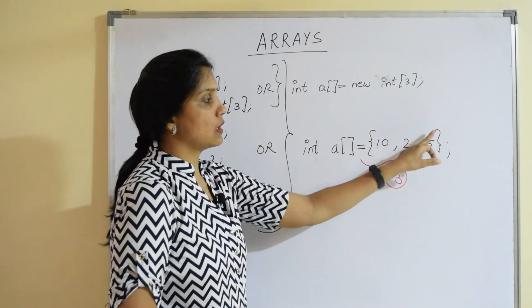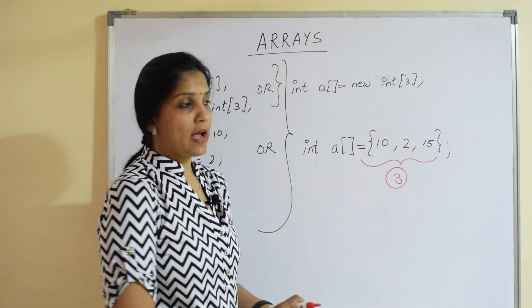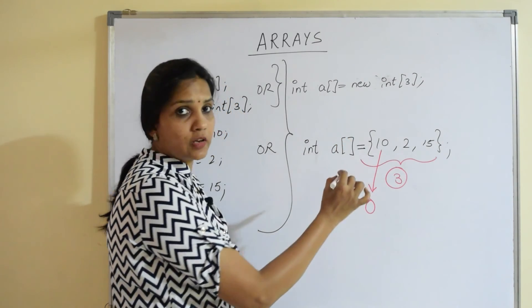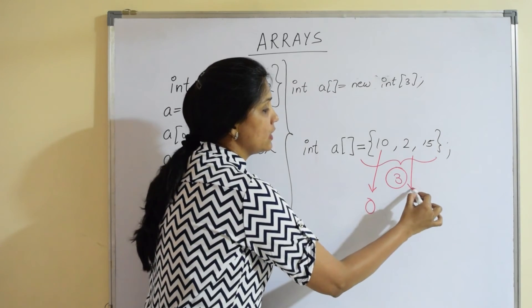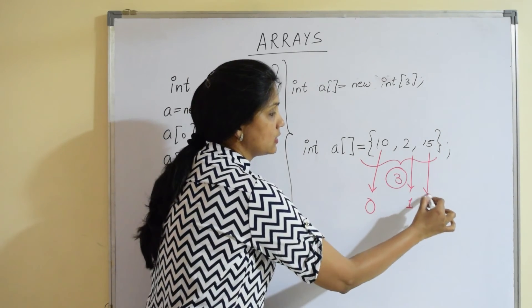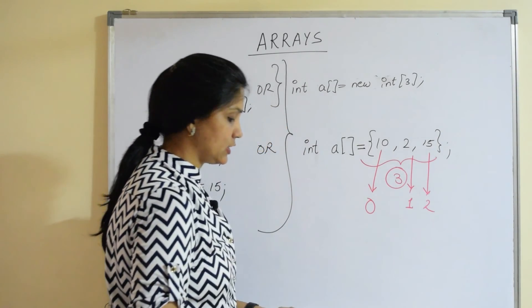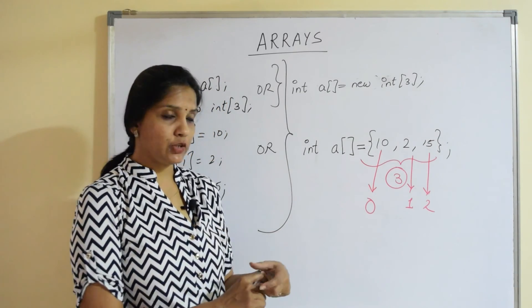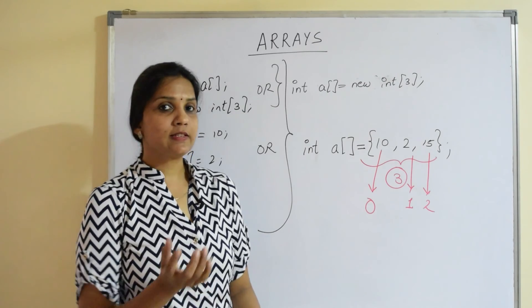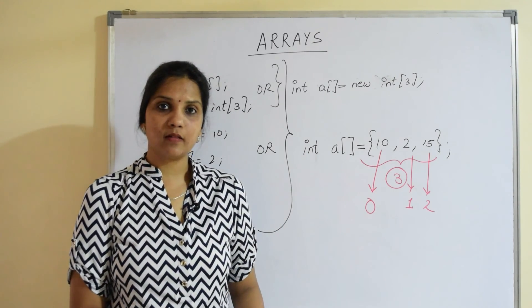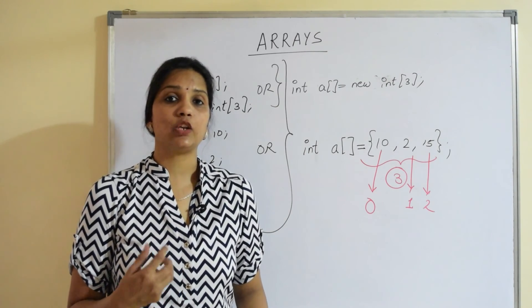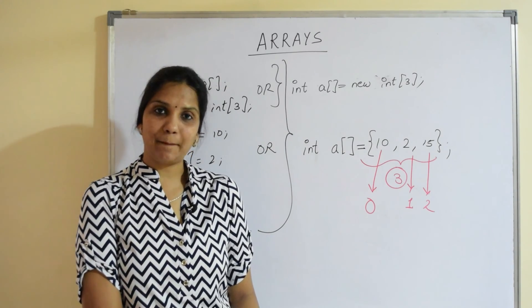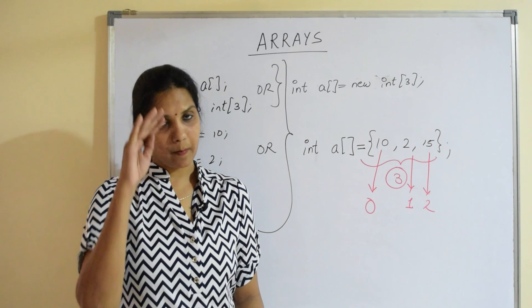Remember this is curly braces and again this particular value is at index 0. It's always the first value at index 0, second value at index 1 and third value at index 2. So with this we come to an end of this video. Next video we will see all these things programmatically and we will also see how we can use loops for iterating over the arrays. Till then happy learning, take care and bye-bye.